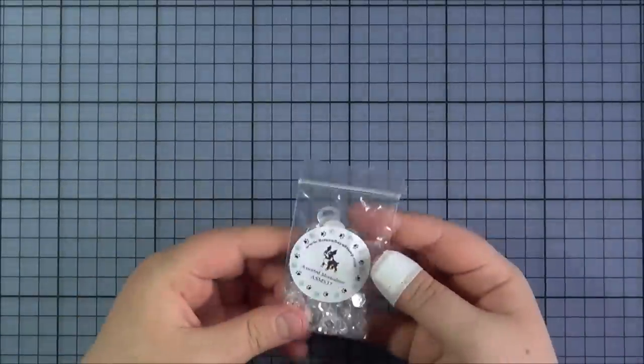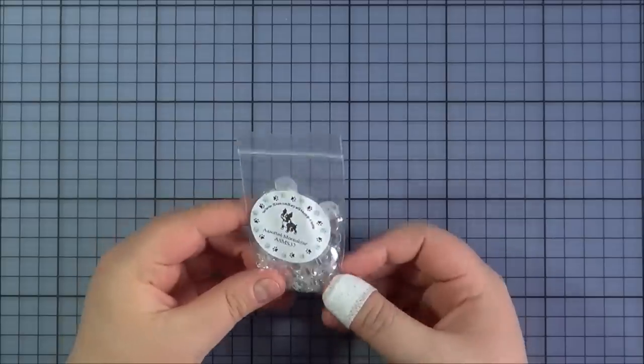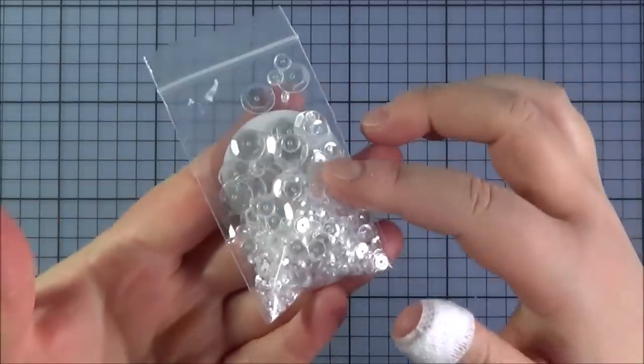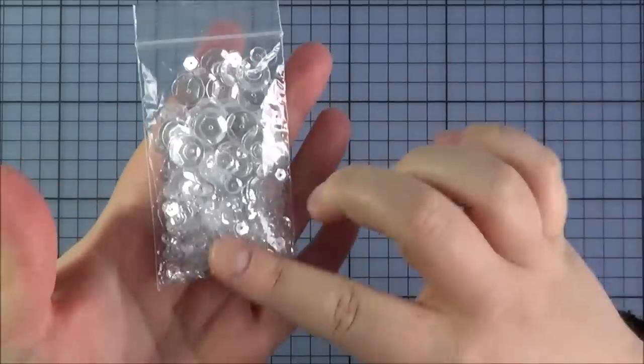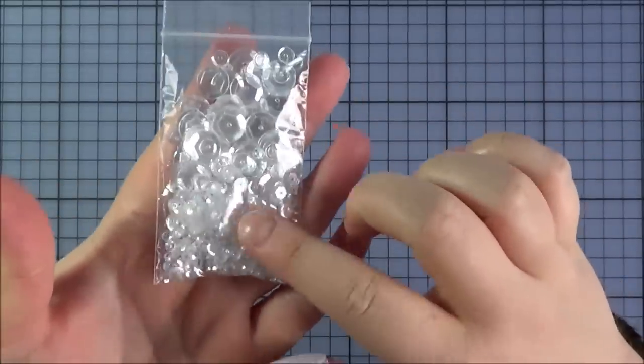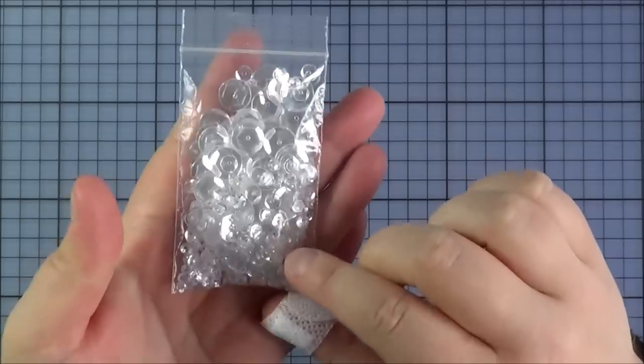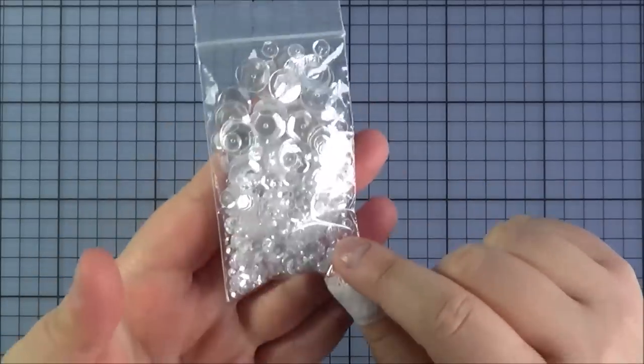Next up I got some of the Assorted Moonshine sequins. I really like that this pack has really large sequins, really tiny ones, and some sizes in between. I quite like these pale moonshine, the clear ones which are quite pretty.